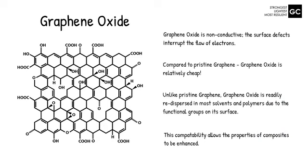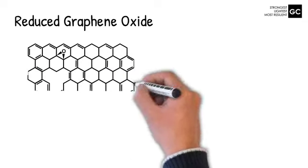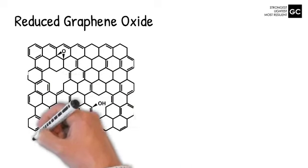You can treat this graphene oxide with a strong reducing agent to produce reduced graphene oxide. The reduction process reduces the surface chemistry, but leaves any defects which were present in the graphene oxide.